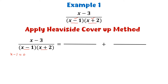We explain this method: we place x minus 1 equal to 0 — that is the first factor — and we get x equal to 1. Now we replace the value of x by 1, but not in the factor from where we have obtained it. Do remember that we don't replace the value of x in the factor from where we have obtained the value of x.